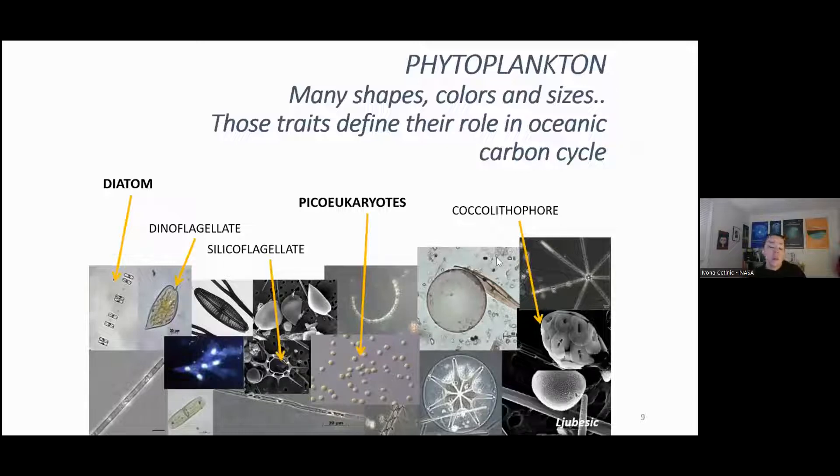They come in many shapes, colors, and sizes. Similar to the plants on land, you know, you have meadows, you have garden, roses, you have trees, you have everything. The similar diversity, even more so, can be found in phytoplankton. Their shape and size and color very often define the role that they play in oceanic food web and oceanic carbon cycle.